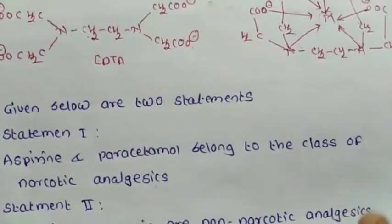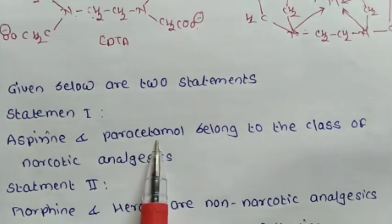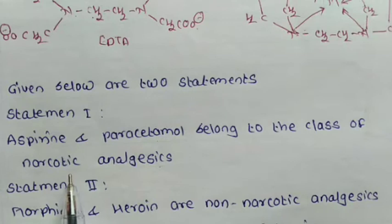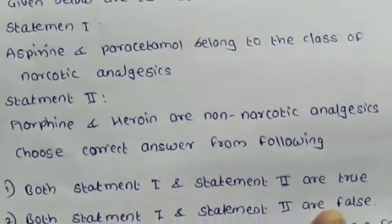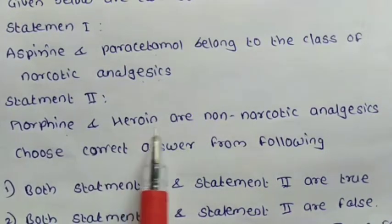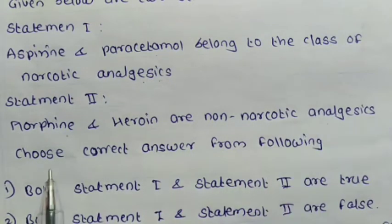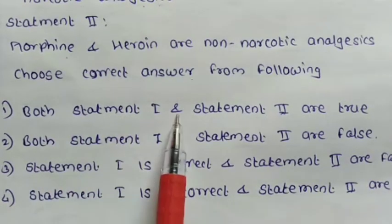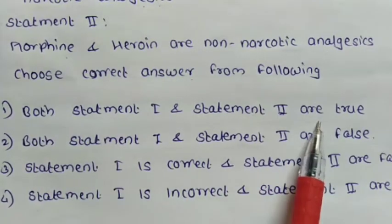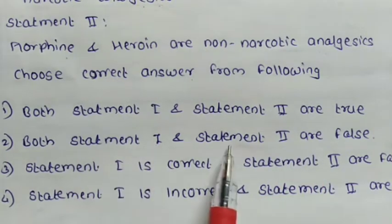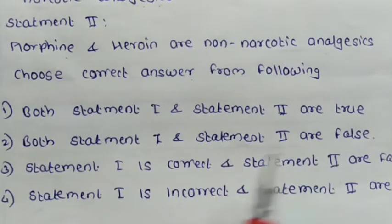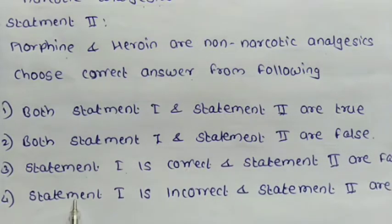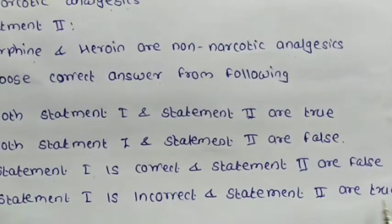See the second question. Two statements are given: Statement 1 — aspirin and paracetamol belong to the class of narcotic analgesics; Statement 2 — morphine and heroin are non-narcotic analgesics. Choose the correct option: (1) both statements are true; (2) both statements are false; (3) statement 1 is correct but statement 2 is false; (4) statement 1 is incorrect but statement 2 is true.